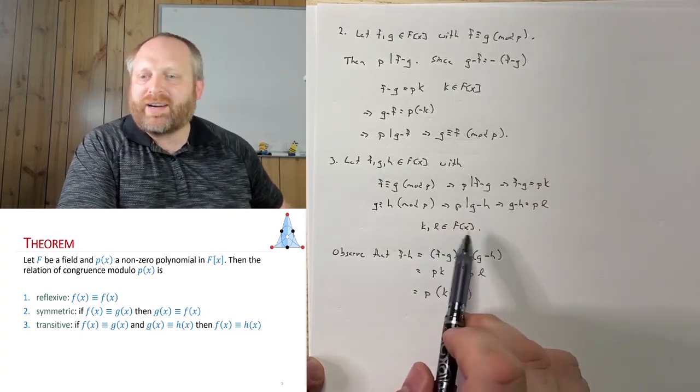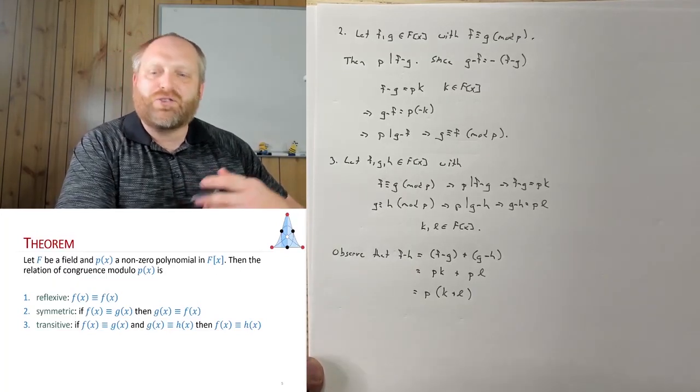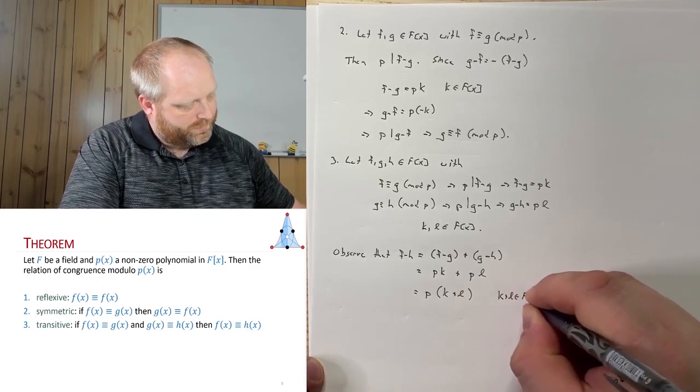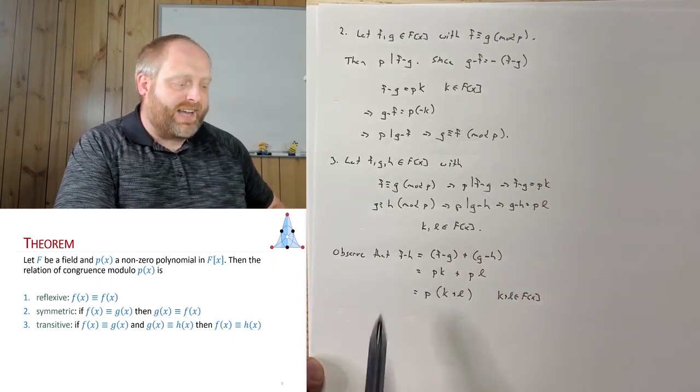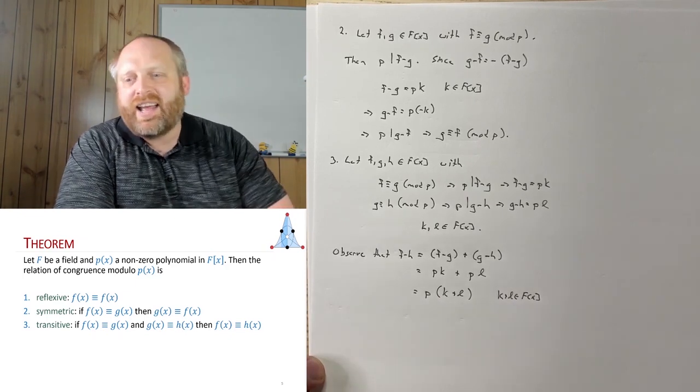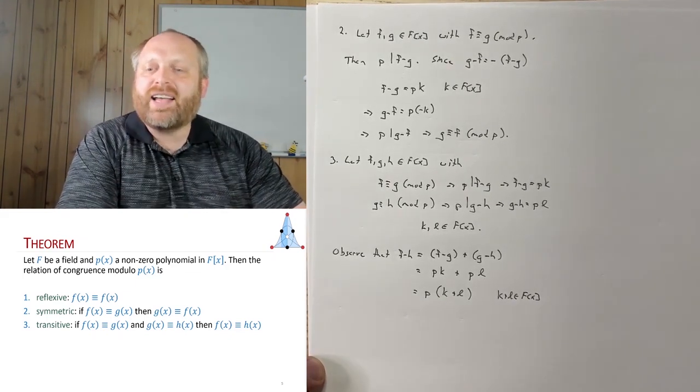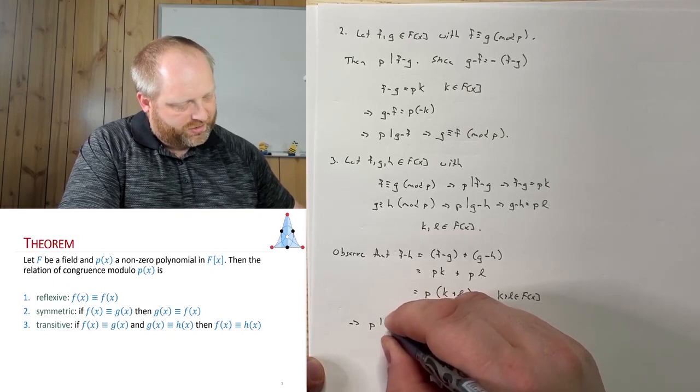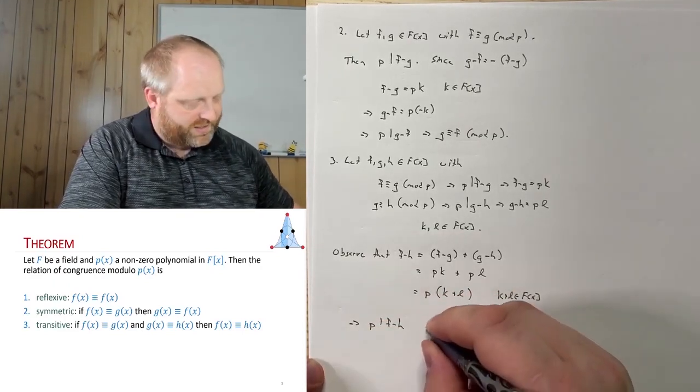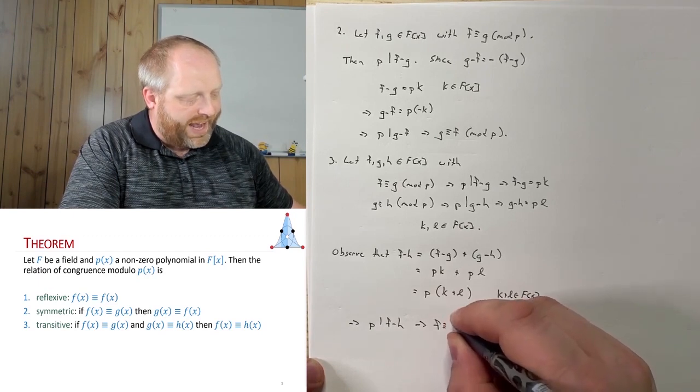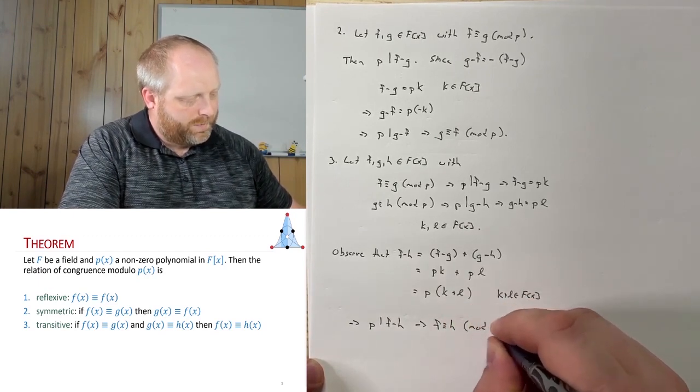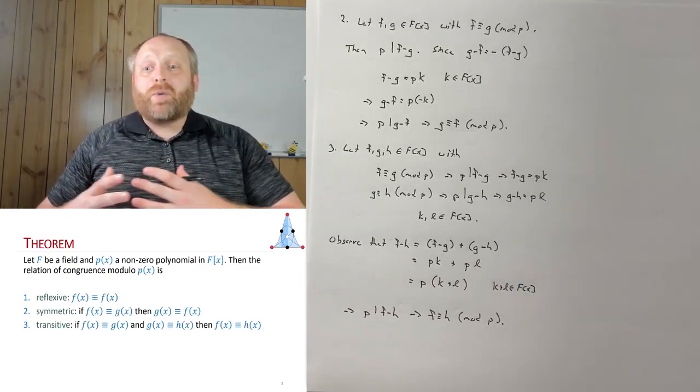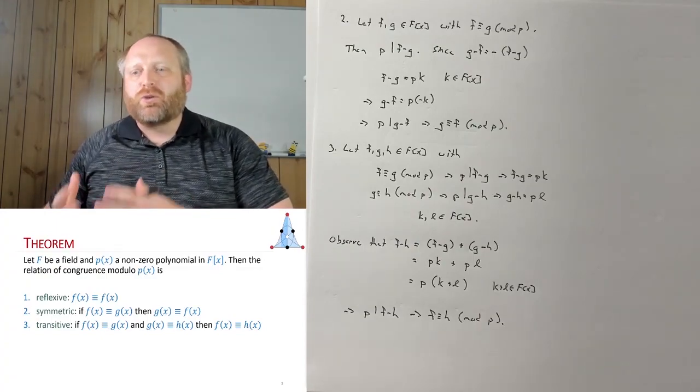Well, k and l are elements of F[x]. I add them together, they're still going to be in F[x]. So that means f minus h is equal to p times an element inside F[x], which means p divides f minus h. And if it divides f minus h, this means that f is equivalent to h mod p, which is exactly what we wanted to be able to show. So here we've shown we have an equivalence relationship, and this equivalence relationship is congruence modulo p.